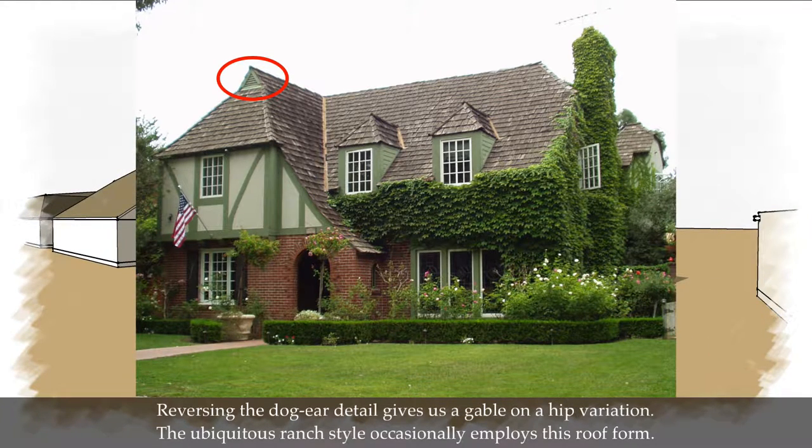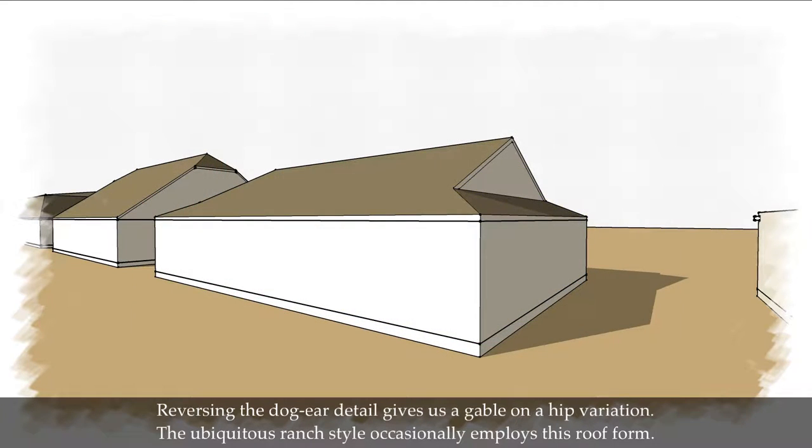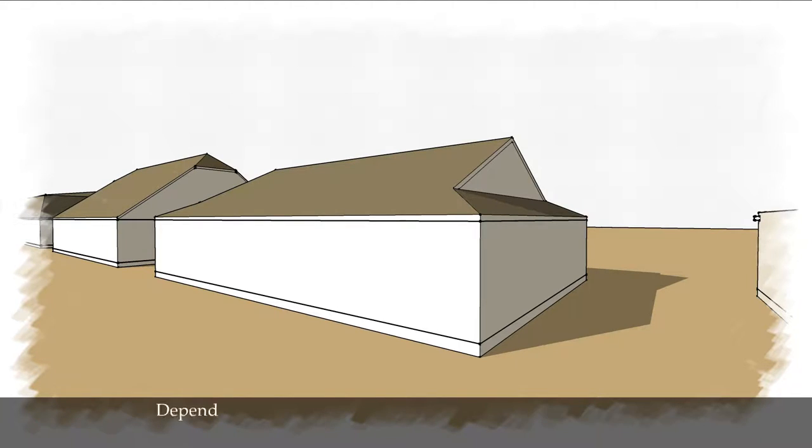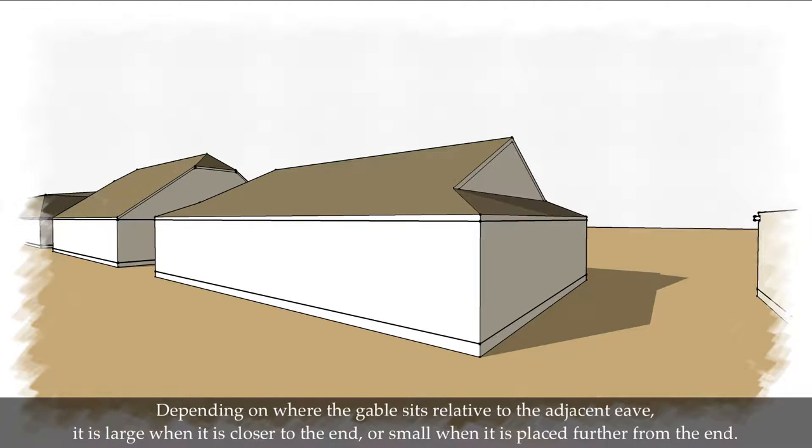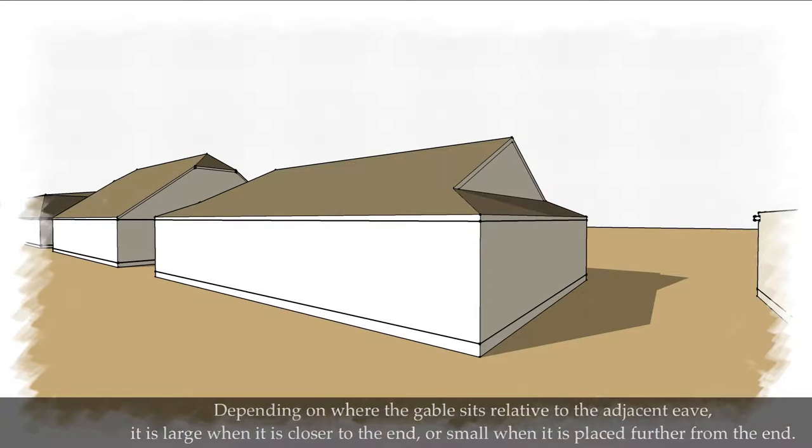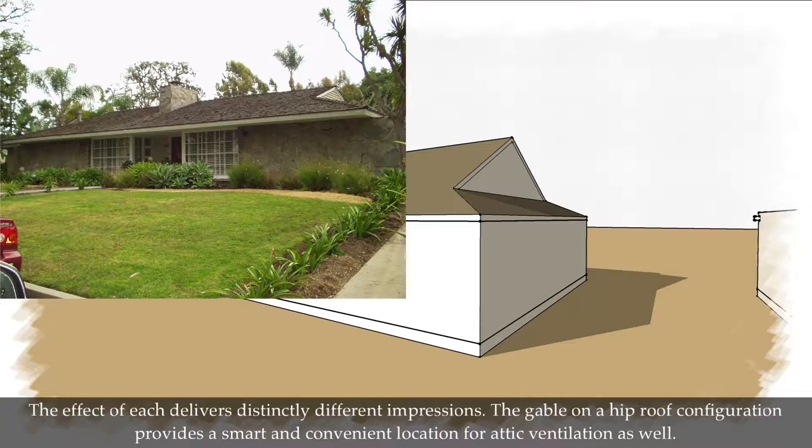Reversing the dog ear detail gives us a gable on a hip variation. The ubiquitous ranch style occasionally employs this form. Depending on where the gable sits relative to the adjacent beam, it is large when it is closer to the end, or small when it is placed further from the end. The effect of each delivers distinctly different impressions. The gable on a hip roof configuration provides a smart and convenient location for attic ventilation as well.